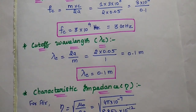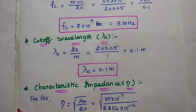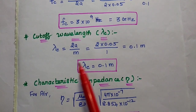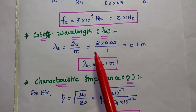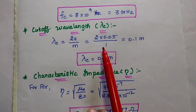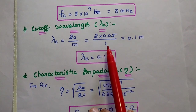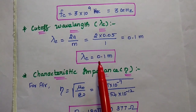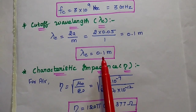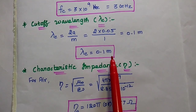The cutoff wavelength lambda c equals 2a by m. Substituting, 2 into 0.05 divided by 1 gives an answer of 0.1 meter.